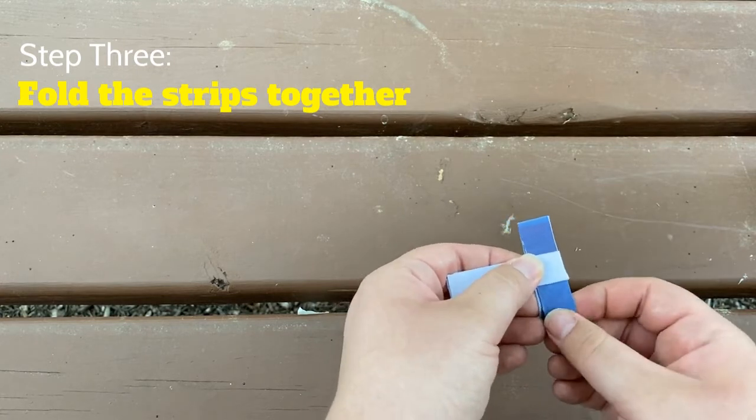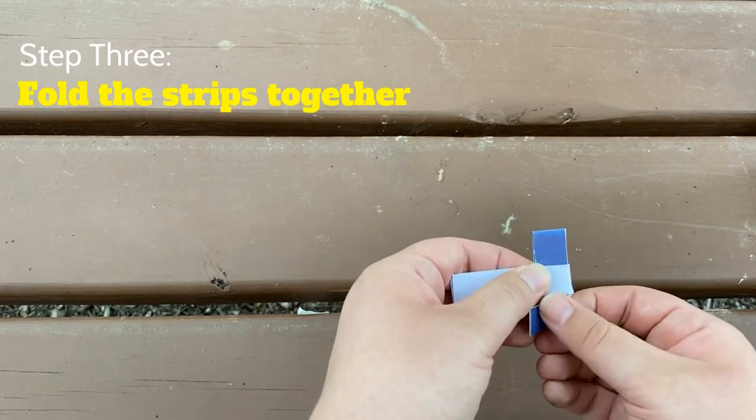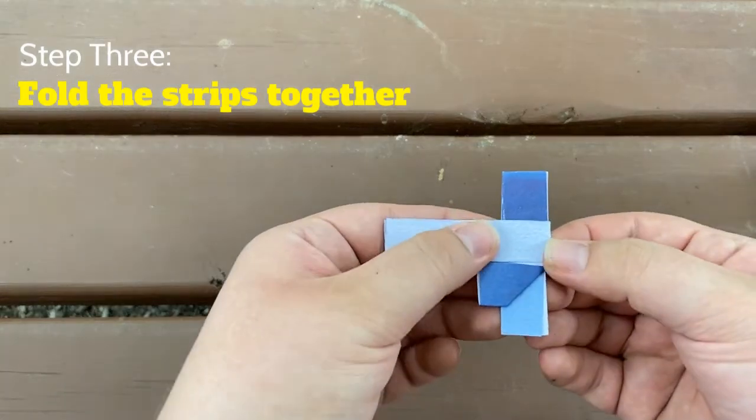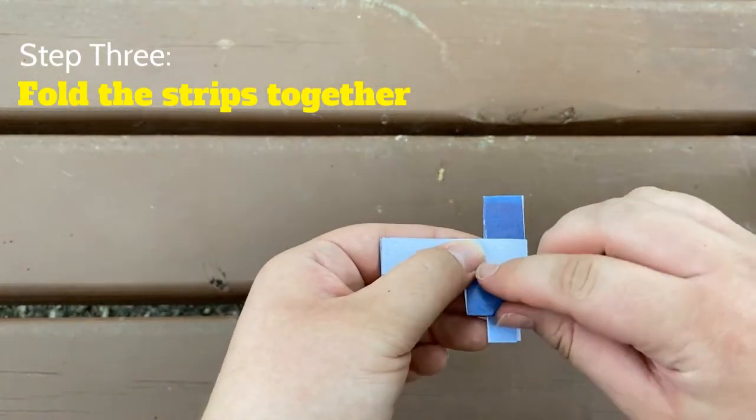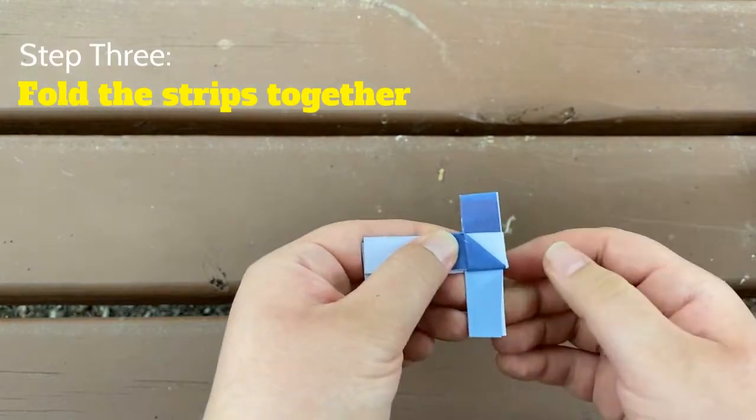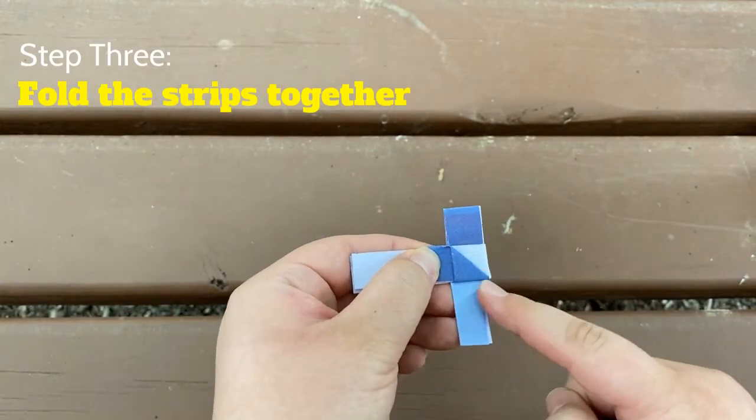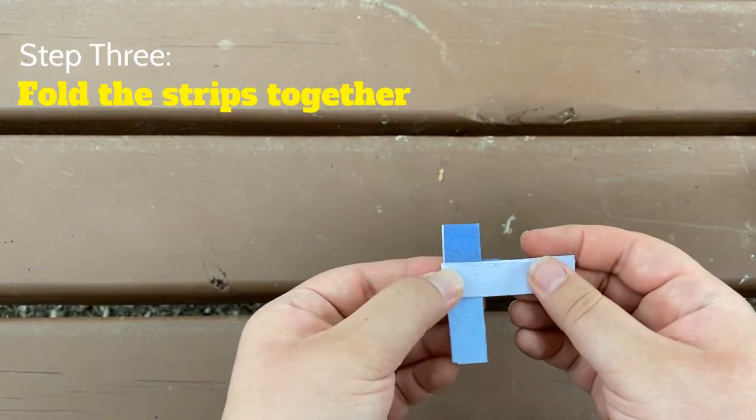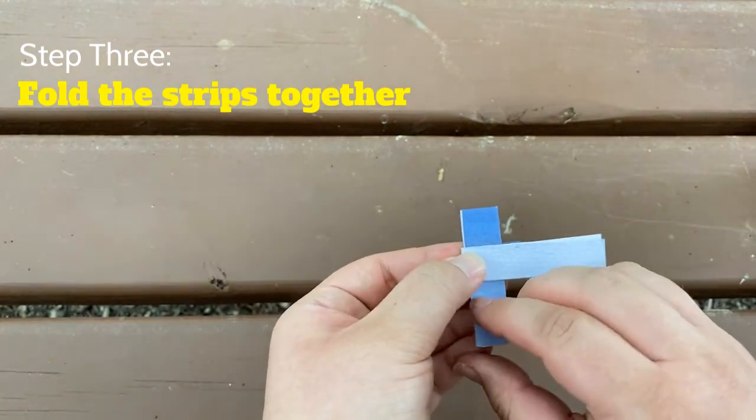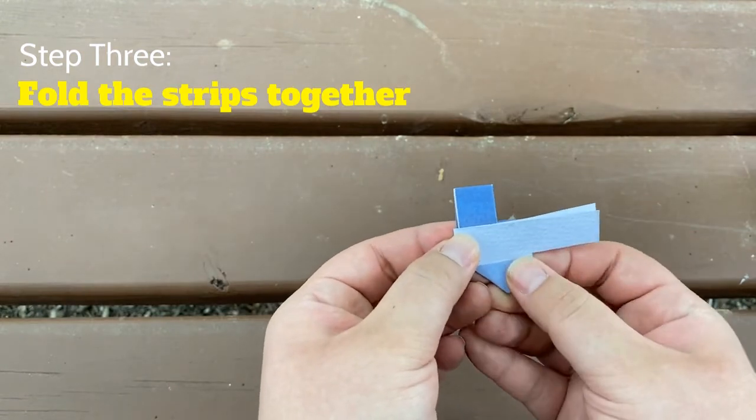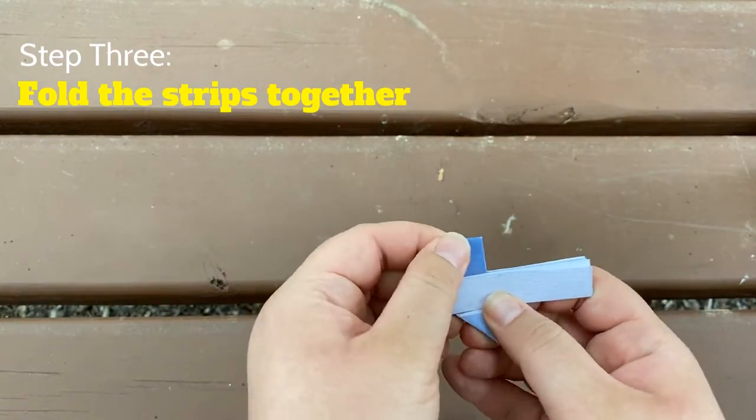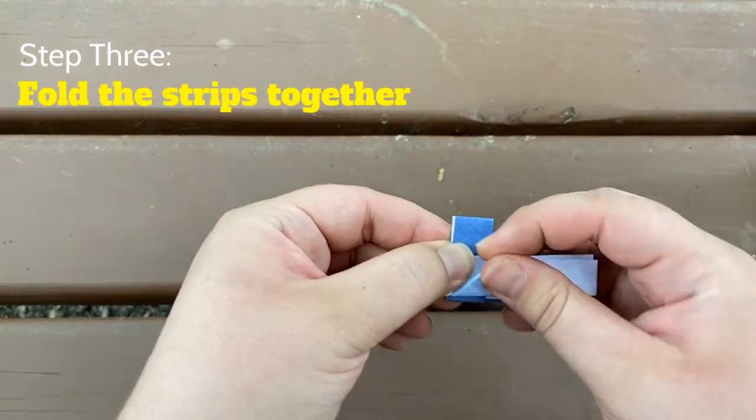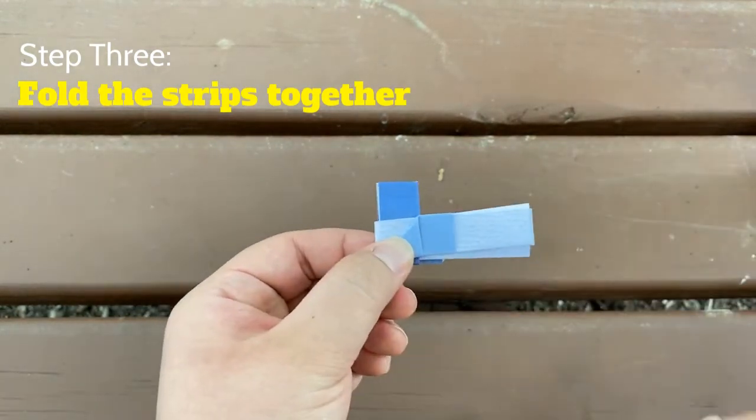So what you're going to do is you're going to take the flaps, or the tail, and you're going to fold it up towards the other strip of paper, like so. And then what you're going to do is you're going to fold the strip of paper up. So you see how it makes a little diagonal there. And then what you're going to do is you're going to flip it over, and you're going to do the same thing on the other side. So again, you're going to fold the paper up towards the other strip, like so. And then you're going to fold it up to the middle, like that.